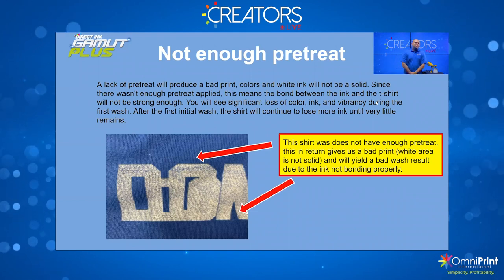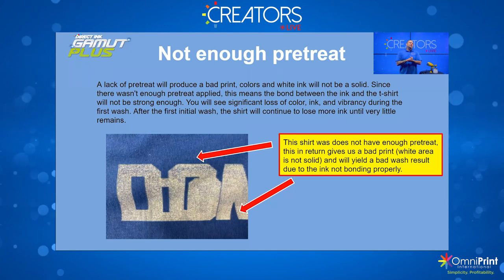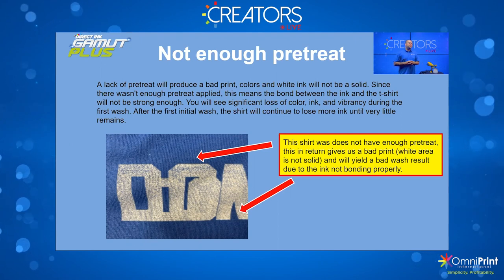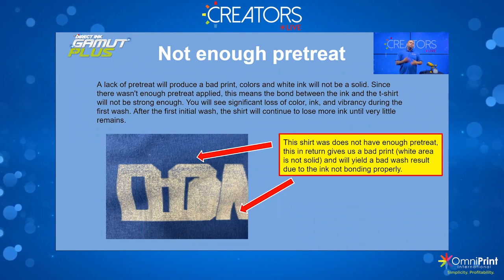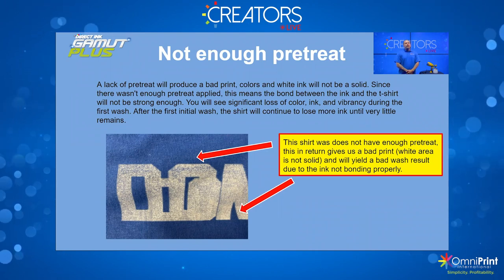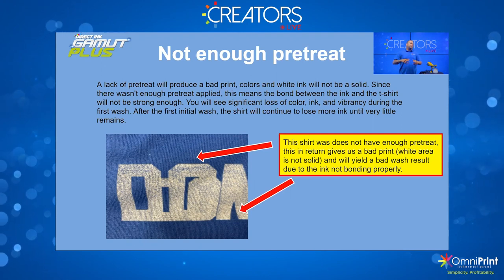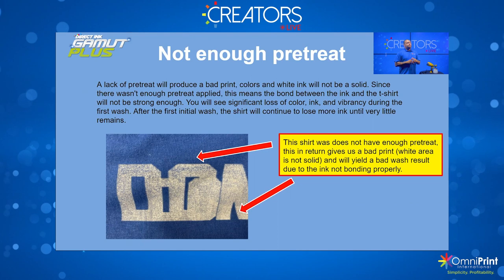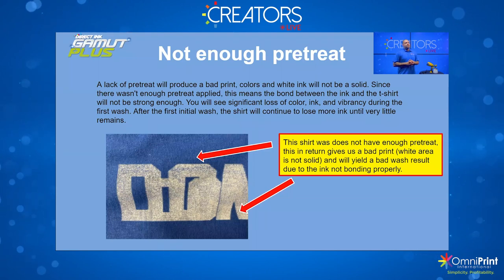Lack of pre-treatment will produce a bad print — colors and white ink will not be solid. As you see on this shirt, the ink is just absorbed in because there wasn't enough pre-treatment. That could be from a nozzle not firing well or spraying too fast with the Wagner. You will see significant loss of color, vibrancy, and ink during the first wash. Make sure you are spraying enough and covering the full area you need — even a little bit bigger — to avoid missing any areas.